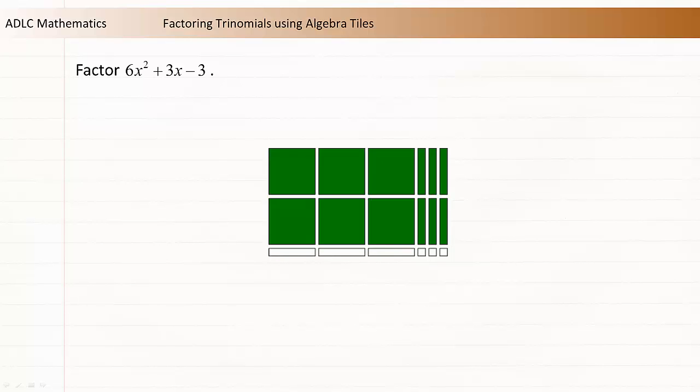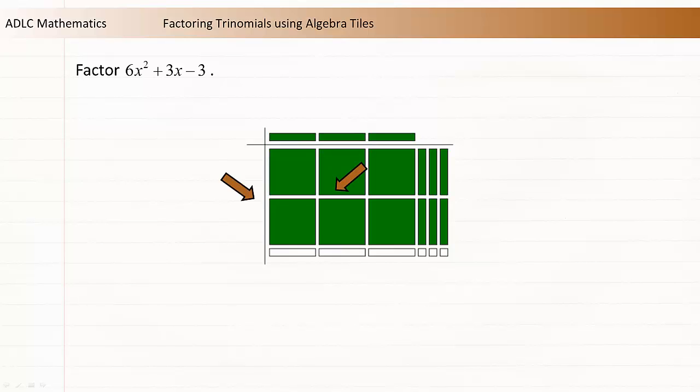Now that we have a rectangle, let's determine its dimensions. Let's start by putting a 3x along the top. For the x² tile to be positive, we need to use a positive x tile on the left side of the diagram. Remember that a positive times a positive is a positive.